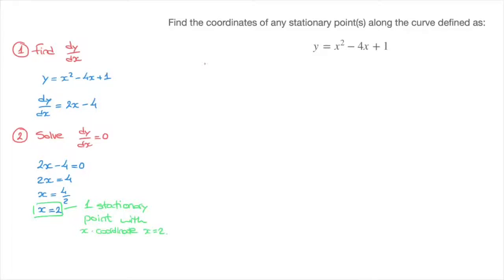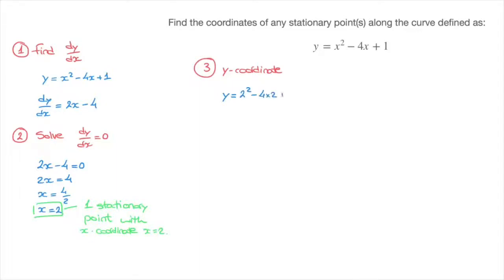We now move on to step 3, where we need to calculate the y-coordinate of the stationary point. We go back to the original function y equals x squared minus 4x plus 1 and substitute x equals 2: y equals 2 squared minus 4 times 2 plus 1, which is 4 minus 8 plus 1, giving y equals negative 3. So the stationary point has coordinates (2, −3).